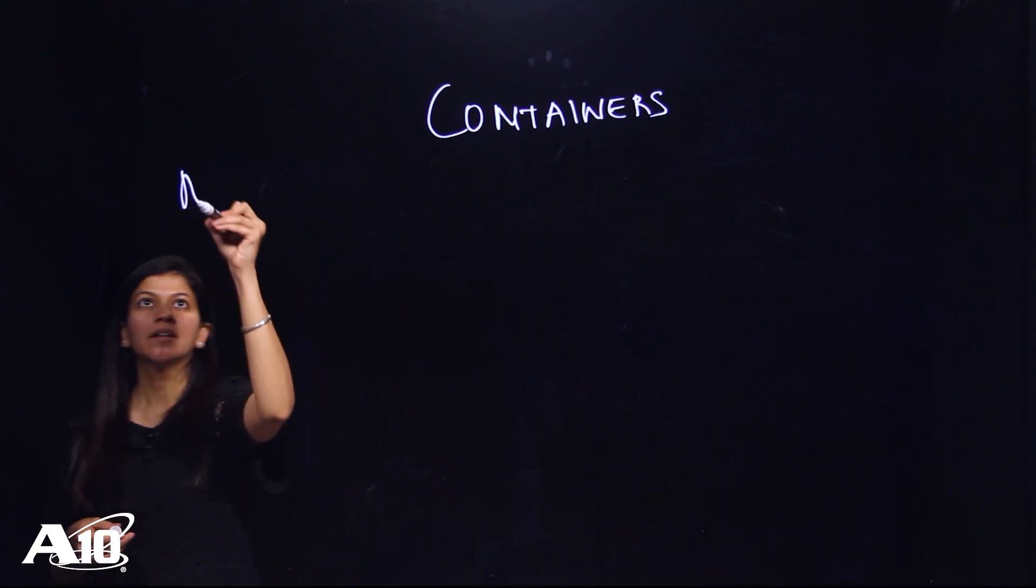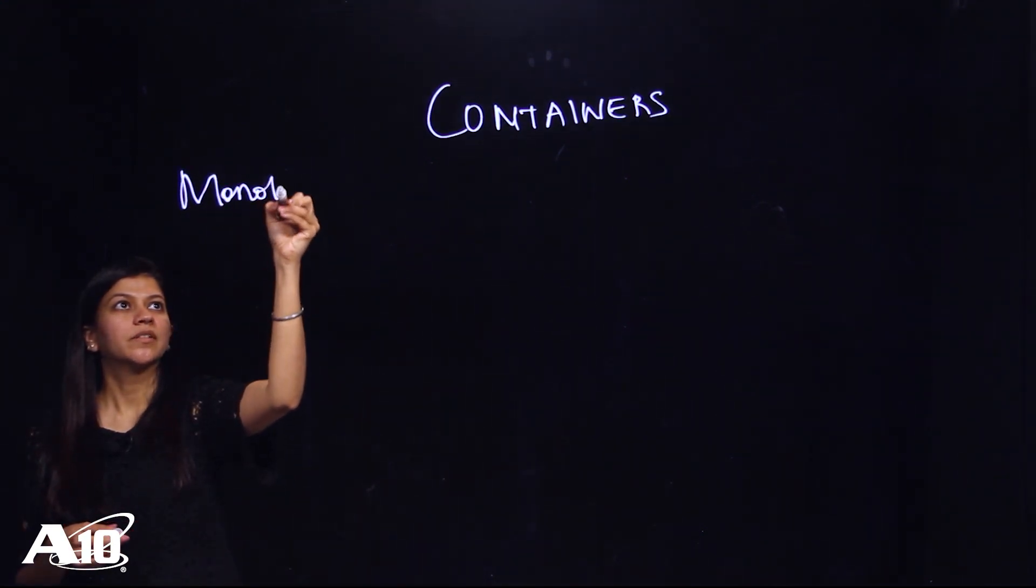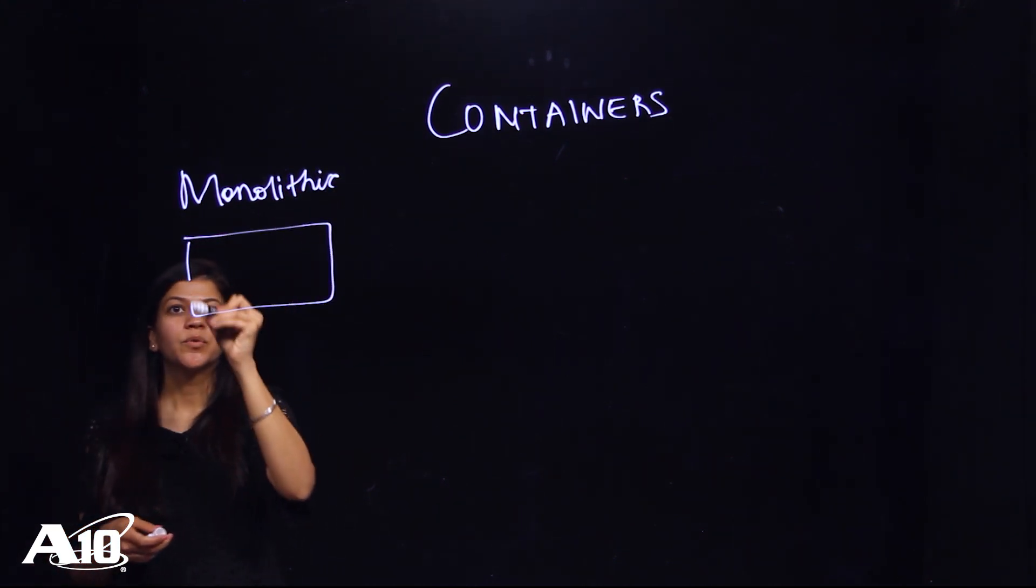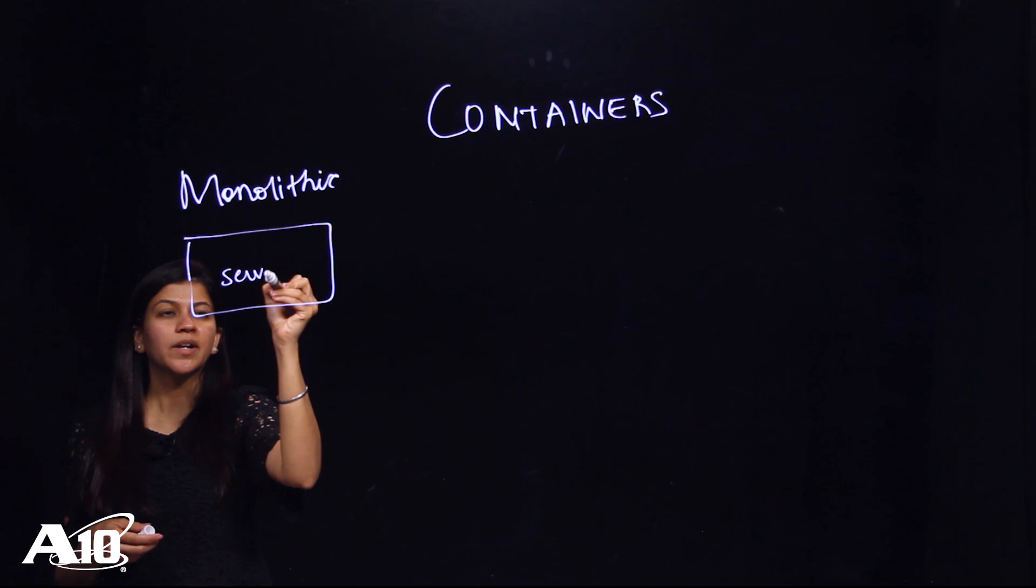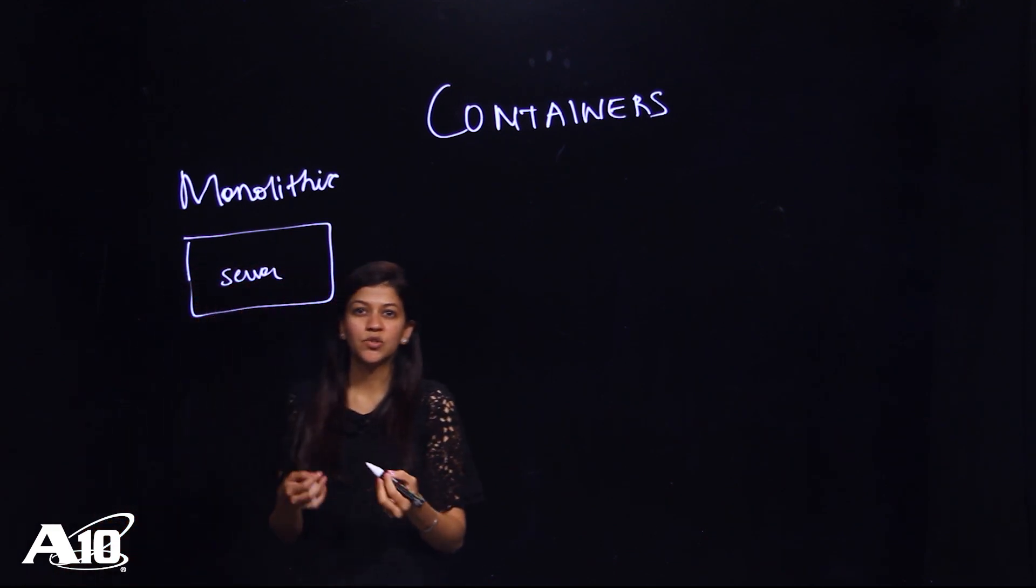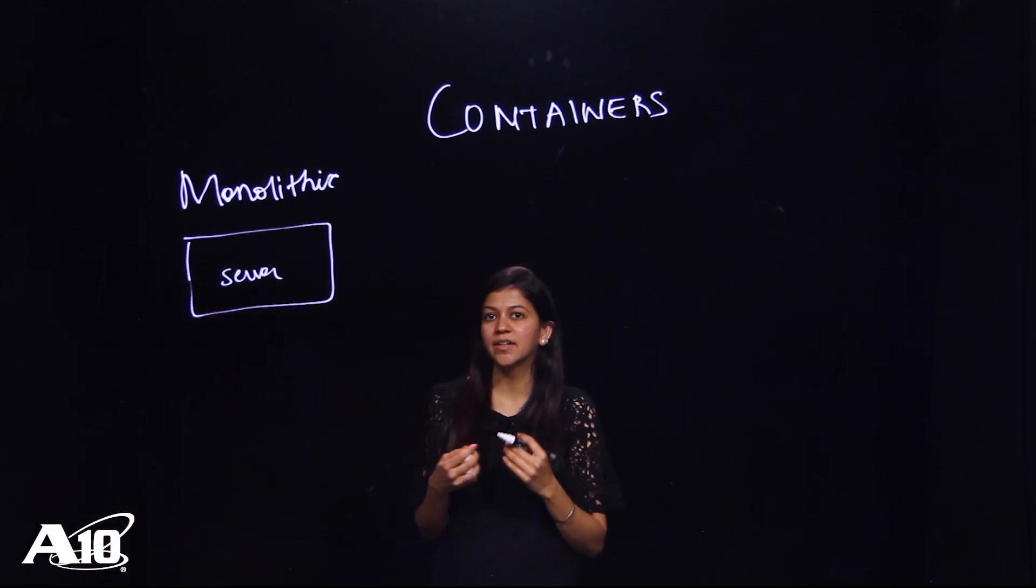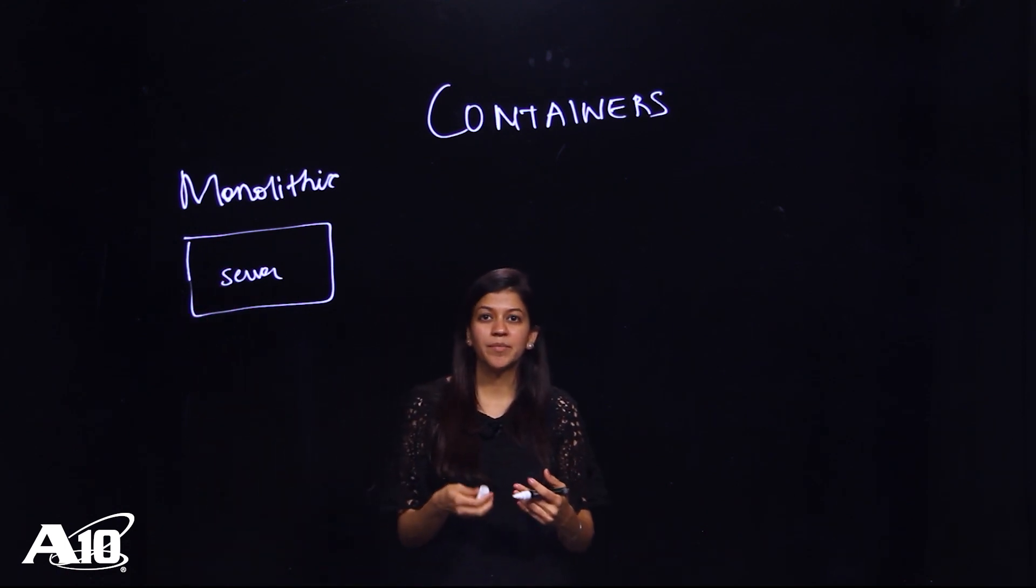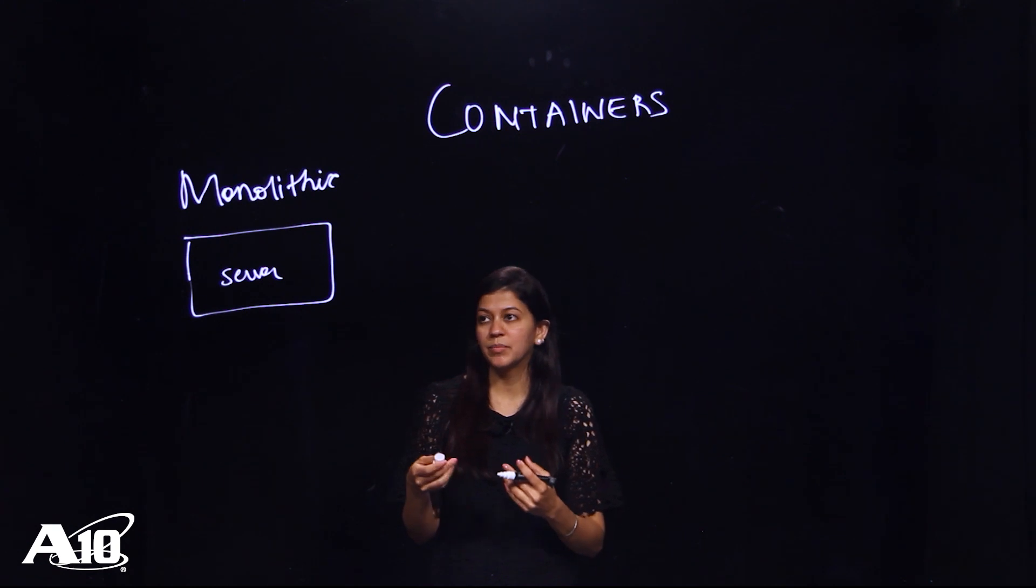What was the problem with the monolithic applications or architecture? The entire code would be sitting in a single server, so anytime anybody had to make a small change they would have to recompile and retest the entire code. This gives you a single point of failure plus it takes a lot of time and cycles to actually get to the complete stage of finishing up the code.